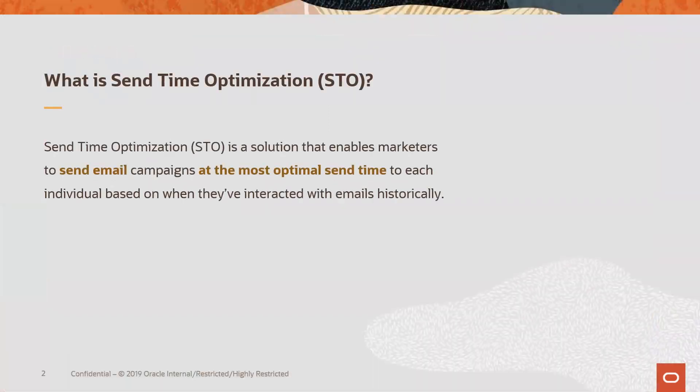So what is Send Time Optimization? It's a solution that enables marketers to send email campaigns at the most optimal send time to each individual, based on when they've interacted with emails historically.